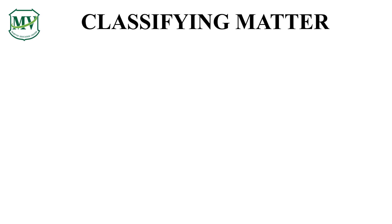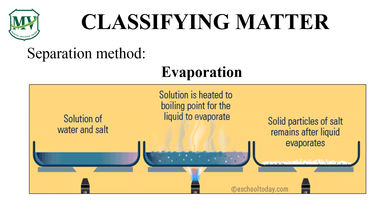Another technique in separating mixture is evaporation. It is used to separate out homogeneous mixtures where there is one or more dissolved salts. The method drives off the liquid components from the solid components. The process typically involves heating the mixture until no more liquid remains, because all of the liquid evaporated. Did you know this is how salt is made, which you often use in cooking?